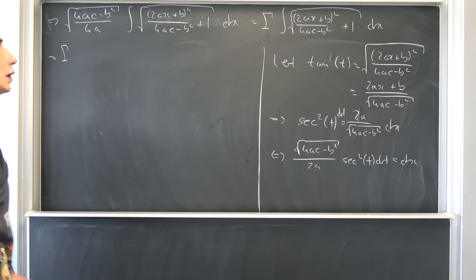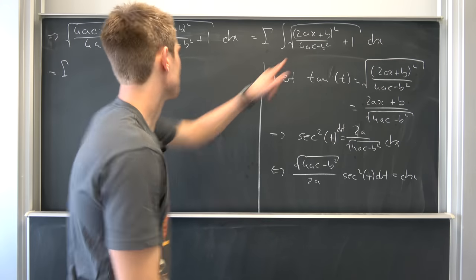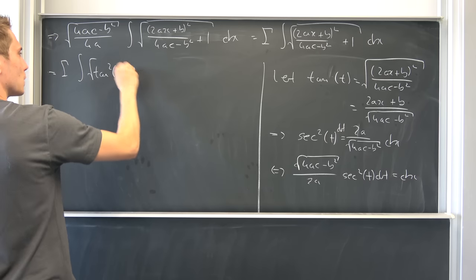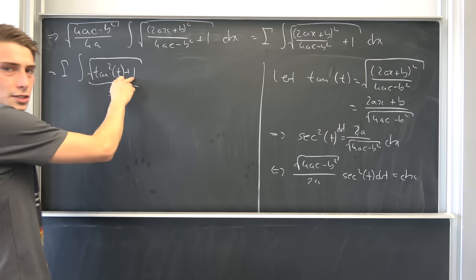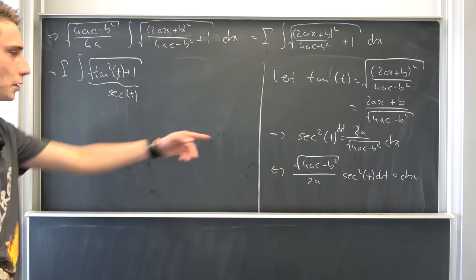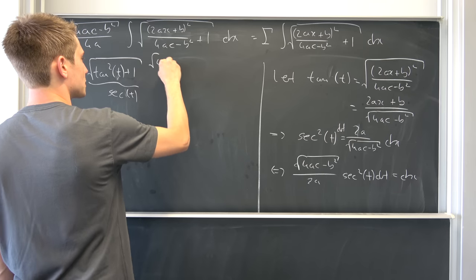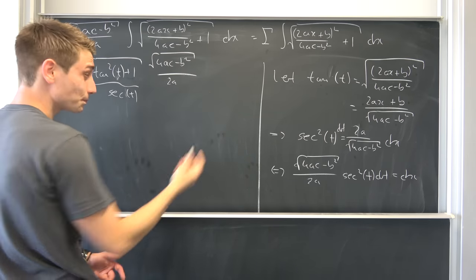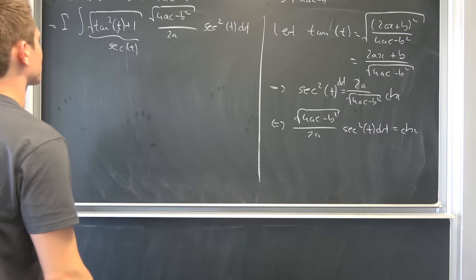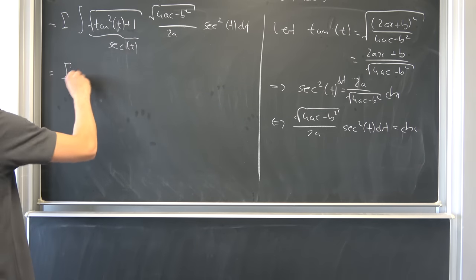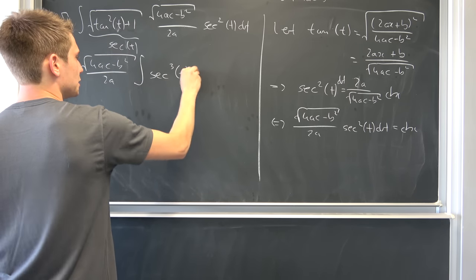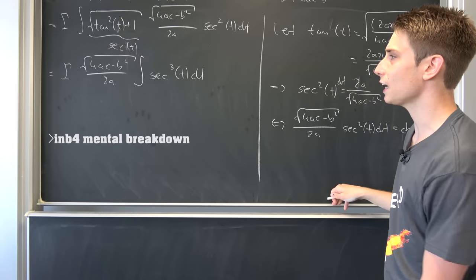So we end up with gamma times the integral of the square root of tan²(t) + 1, which evaluates to secant of t, times dx — which is sqrt(4ac − b²) over 2a times secant squared of t dt. So we end up with gamma times sqrt(4ac − b²) over 2a times the integral of secant to the third power of t dt. And like hell I know how to integrate this thing — I have no idea at the moment.